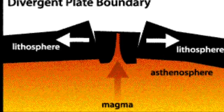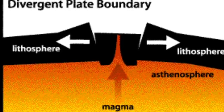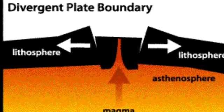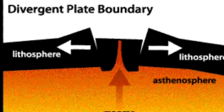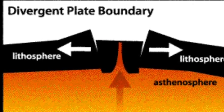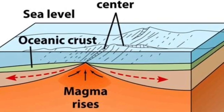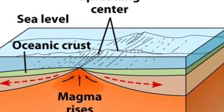Divergent plate boundaries are when two plates are moving away from each other, and new crust forming from magma rises to the earth's surface between the two plates.